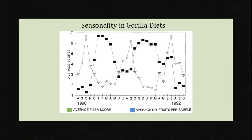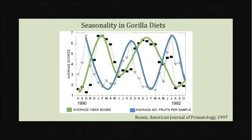This graphic shows the seasonality differences in western lowland gorilla diet over two years. The x-axis depicts months across two years and the y-axis shows abundance of food type. Green indicates the amount of fiber — herbs and vegetation — in the gorilla diet, while blue indicates fruit abundance. It's clear that the gorillas rely more on fruit during rainy or fruiting seasons and more on vegetation during the dry seasons.